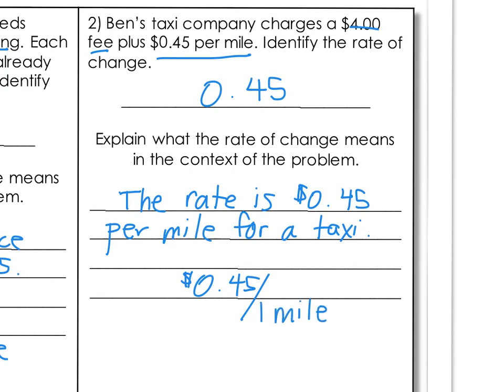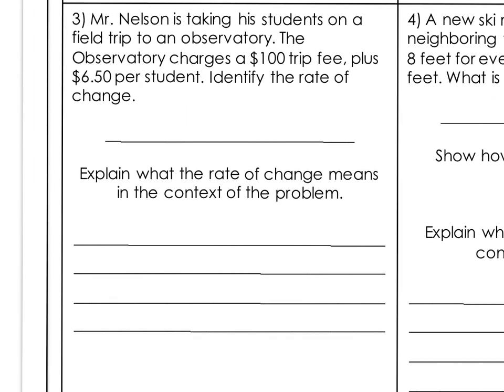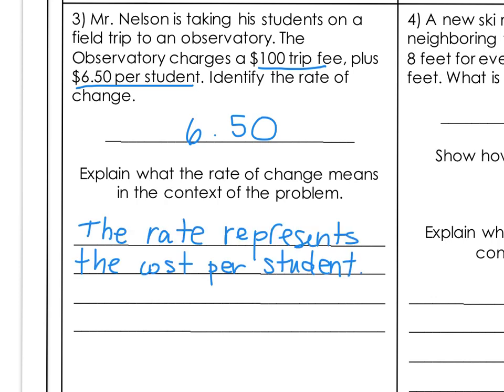Number three: Mr. Nelson is taking his students on a field trip to an observatory. The observatory charges a $100 fee plus $6.50 per student. Identify the rate of change — which one of those is a rate? $6.50 per student, so the rate or slope is $6.50. That represents the cost per student, written as $6.50 per one student.